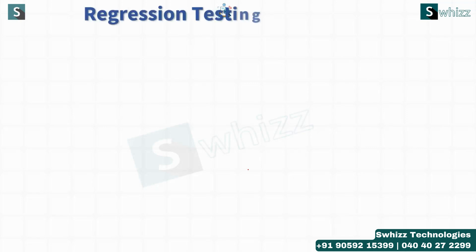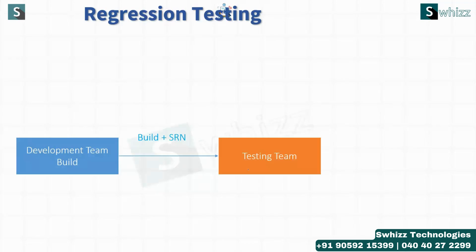The overview of regression testing is this: you have to execute all the different modules — some partial regression, some full regression across different modules. The already-executed test cases or functionalities need to be executed again and again.